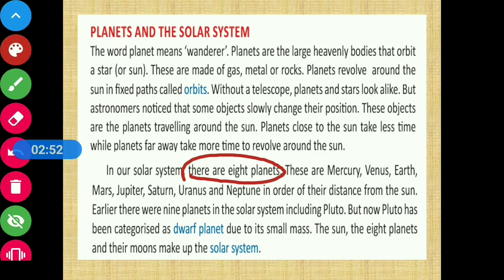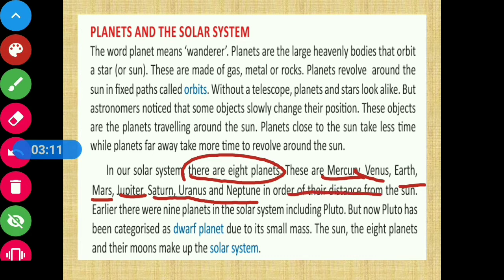The 8 planets, in order of their distance from the sun, are: Mercury, Venus, Earth, Mars, Jupiter, Saturn, Uranus, and Neptune. This order is based on their distance from the sun — Mercury being the closest and Neptune being the farthest.